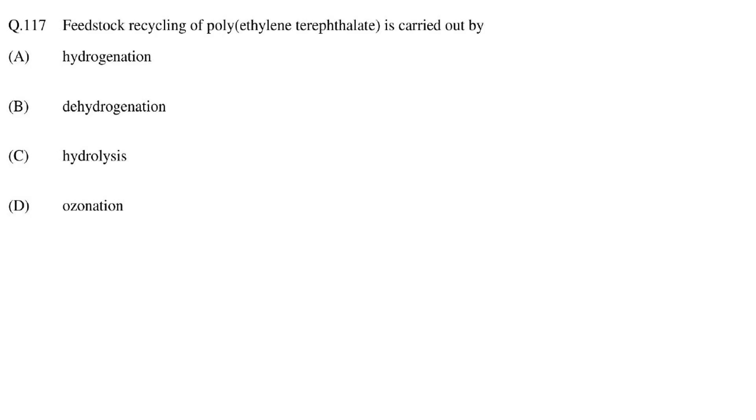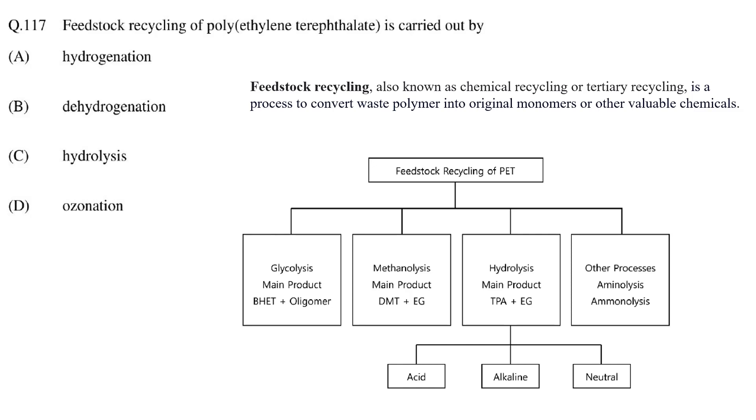Next question is which reaction leads to feedstock recycling of polyethylene terephthalate. Feedstock recycling is also known as chemical recycling or tertiary recycling. During feedstock or chemical recycling, PET waste is degraded to PET monomers or oligomers. Typical reactions for converting PET waste to monomer or oligomers are hydrolysis, ammonolysis, glycolysis or methanolysis. Because through these reactions backbone chain is broken. In the given options except hydrolysis all other options are mainly for side group modification or modification of main chain rather than degradation of main chain. So the correct answer is option C.